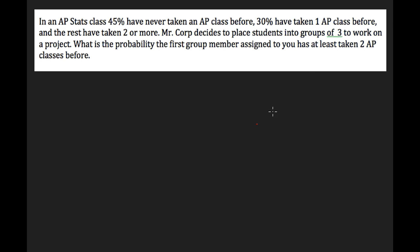We have another review question — number two from your review worksheet given on Monday. In an AP stats class, 45% have never taken an AP class before, 30% have taken one AP class, and the rest have taken two or more. Mr. Corp decides to place students into groups of three to work on a project. What is the probability the first group member assigned to you has taken at least two AP classes before?